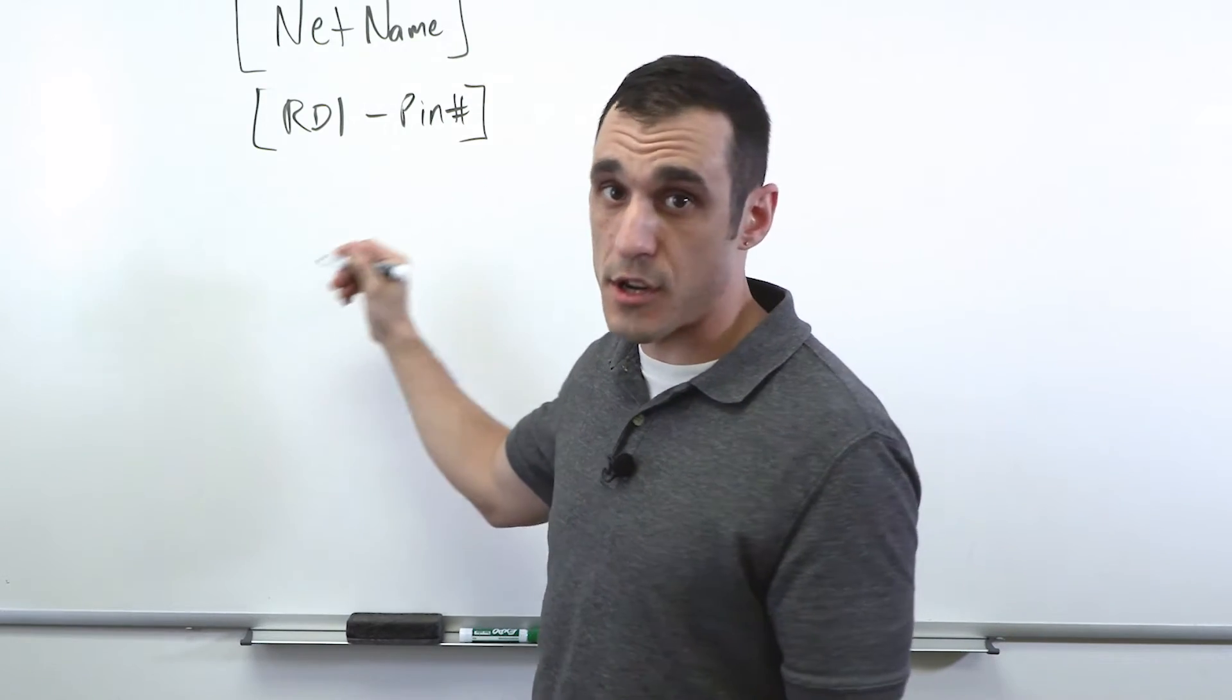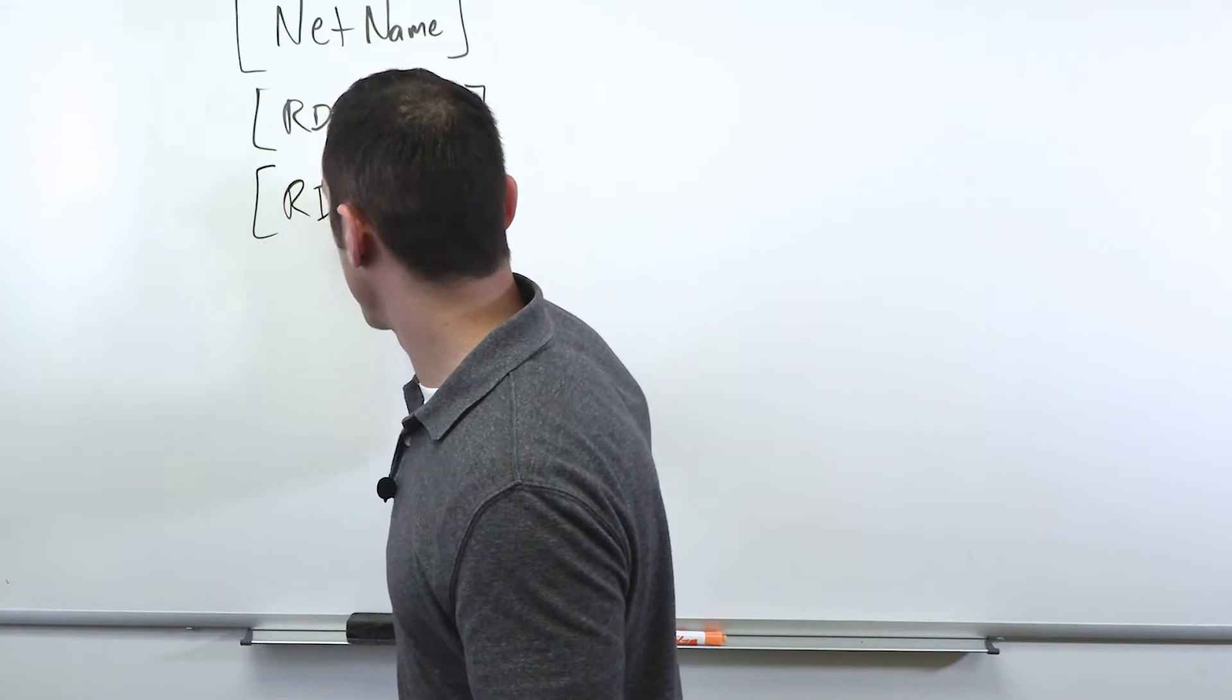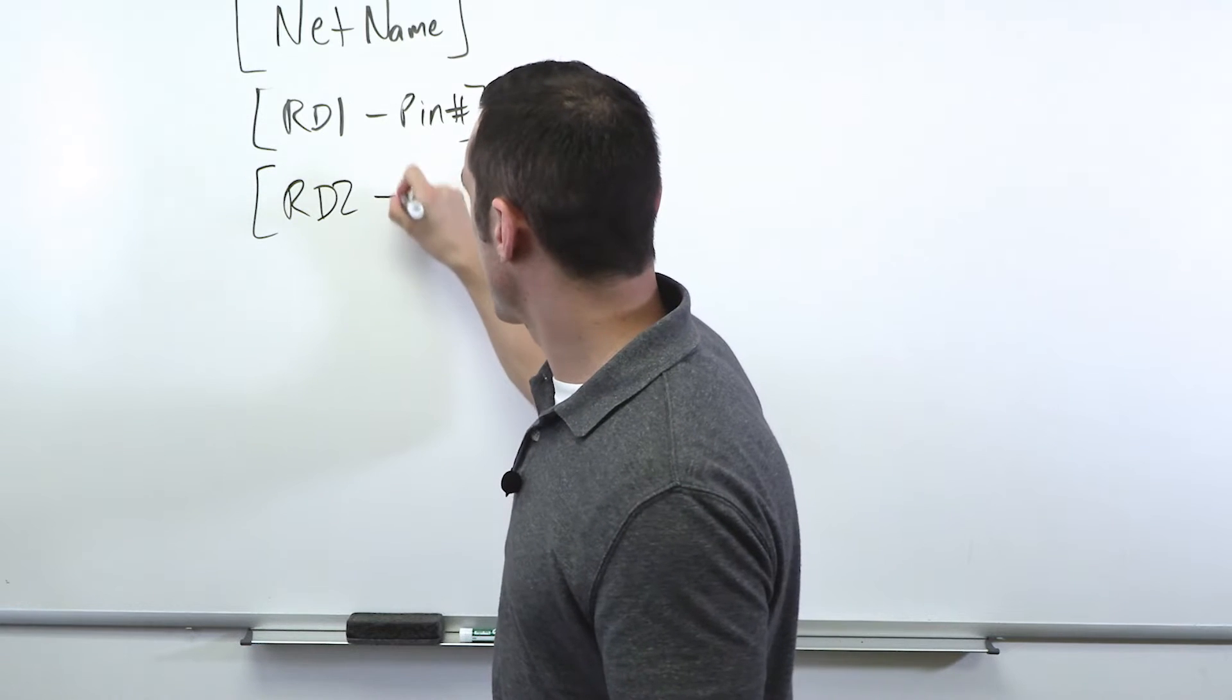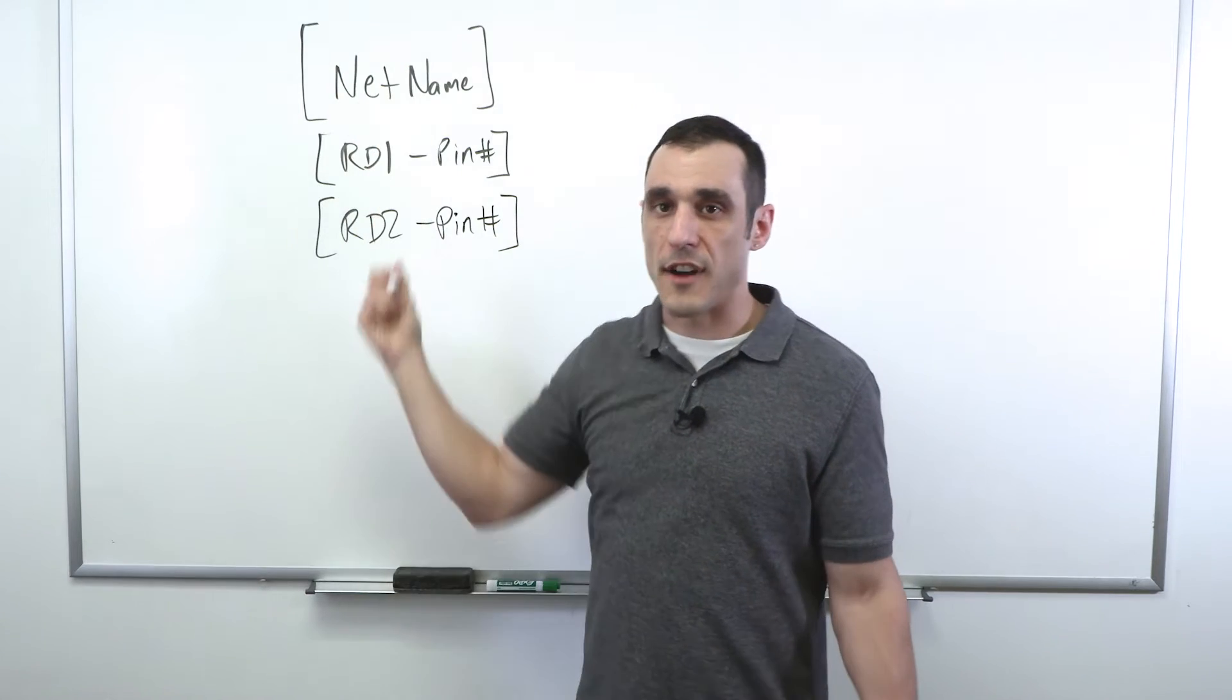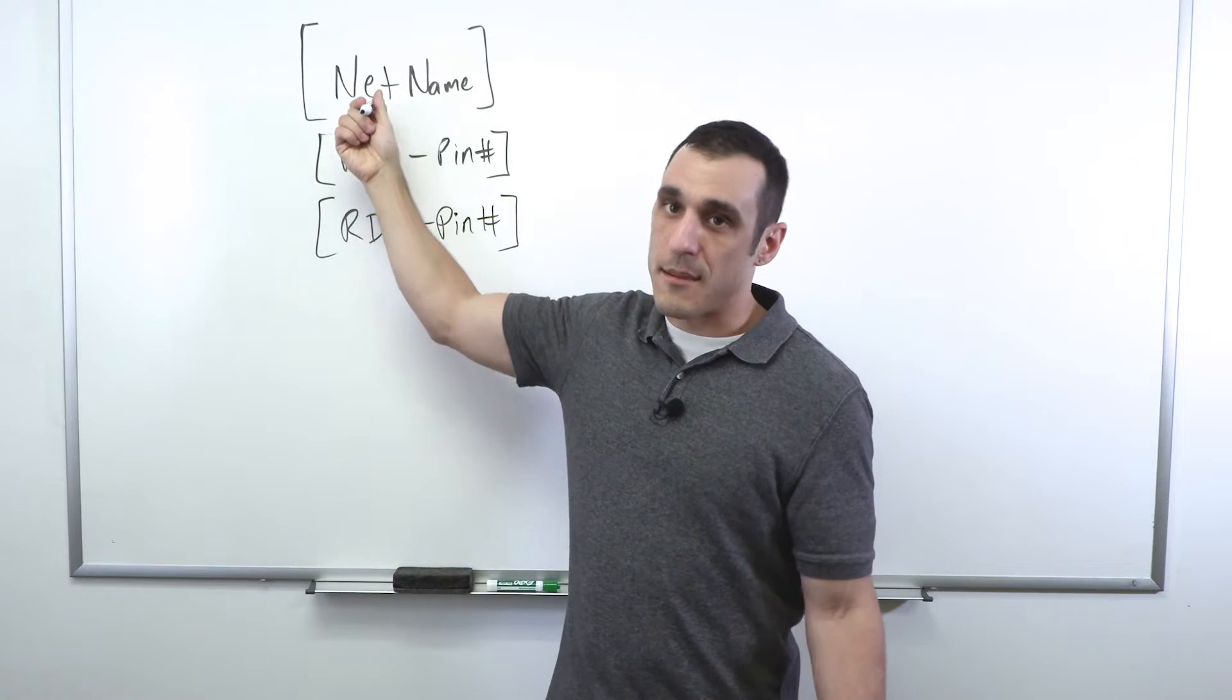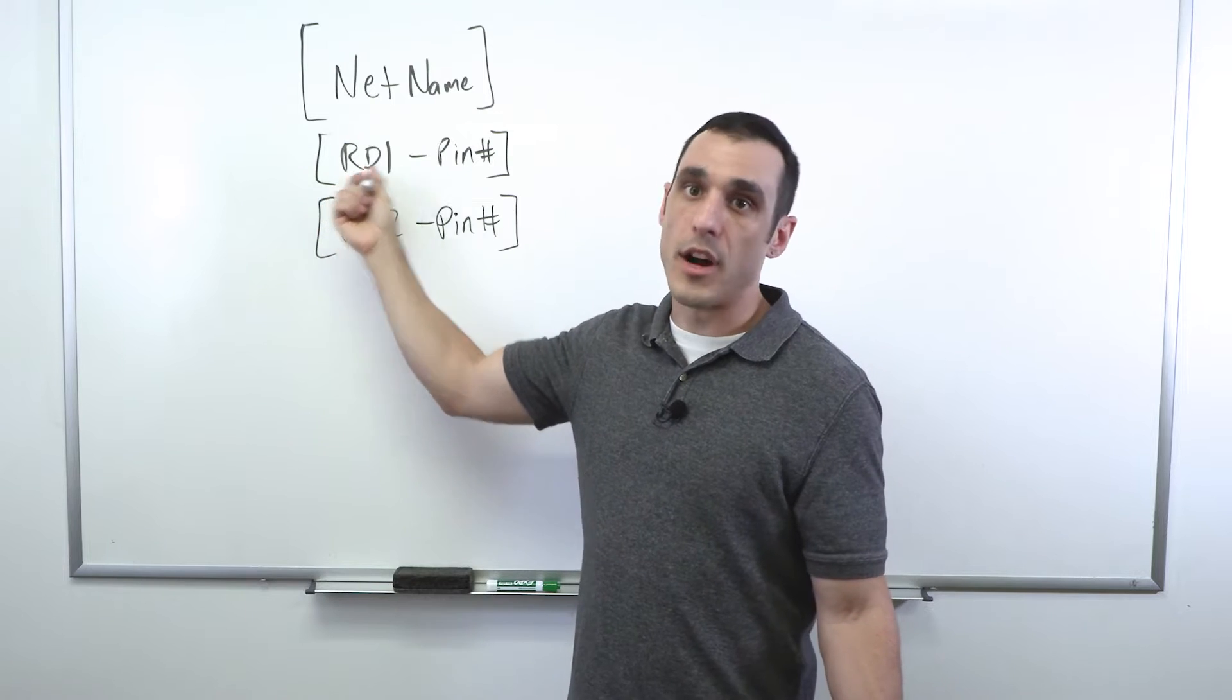Now the net has to go somewhere. So it goes to reference designator number two. And on reference designator number two, there's some other pin number. This defines some net name and the electrical connection between reference designator number one, this pin, and reference designator number two, this pin.